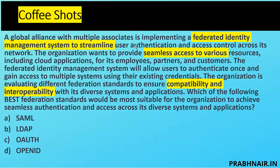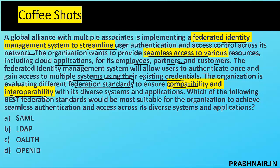First question: a global alliance with multiple associates is implementing a federated identity management system to streamline user authentication and access control across its network. The organization wants to provide seamless access to various resources, including cloud applications, for its employees, partners, and customers. The federated identity management will allow users to authenticate once and gain access to multiple systems using their existing credentials. The organization is evaluating different federation standards to ensure compatibility and interoperability with its diverse systems and applications.